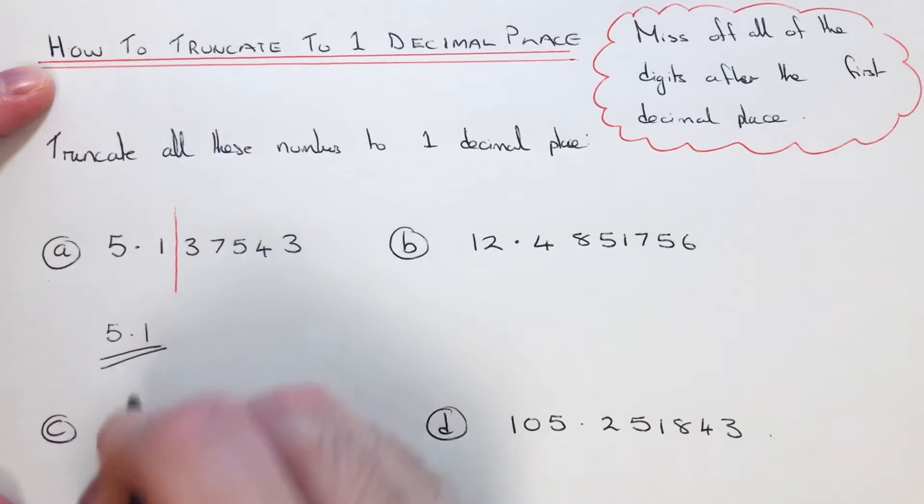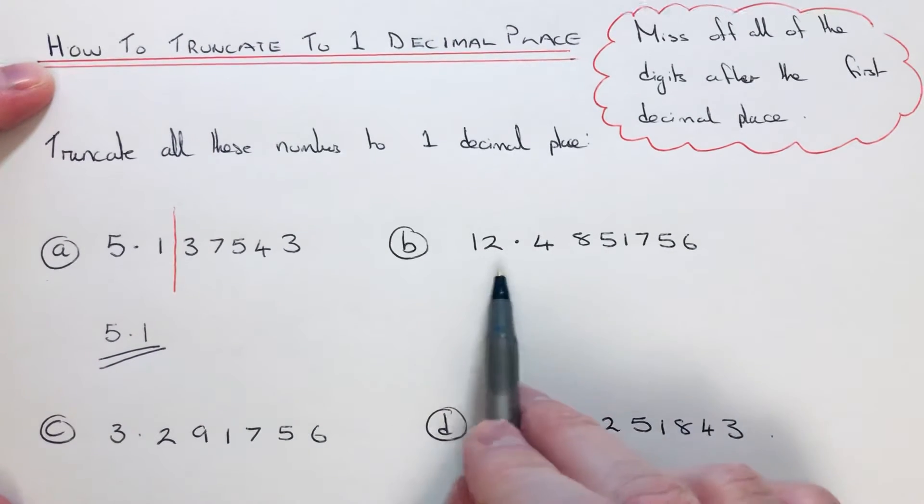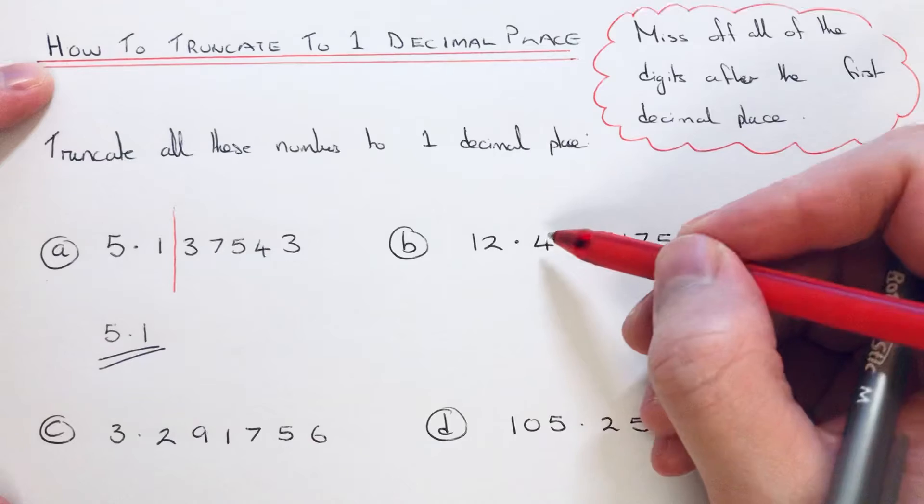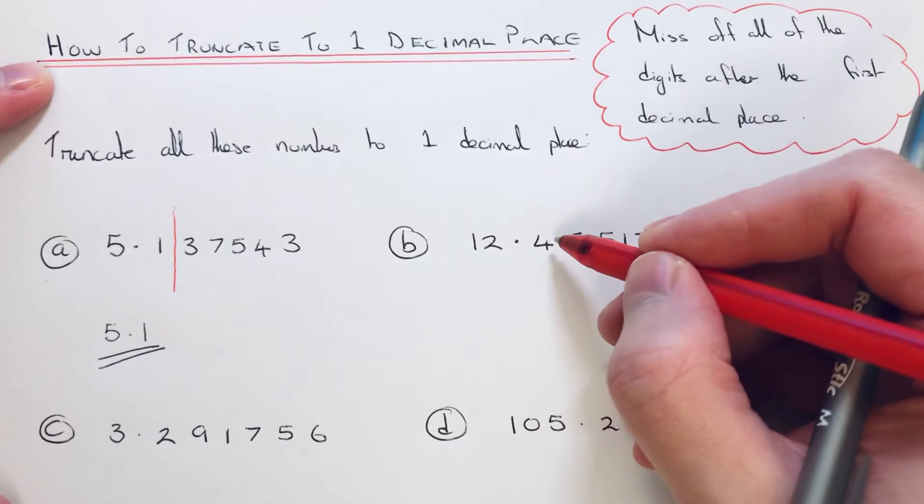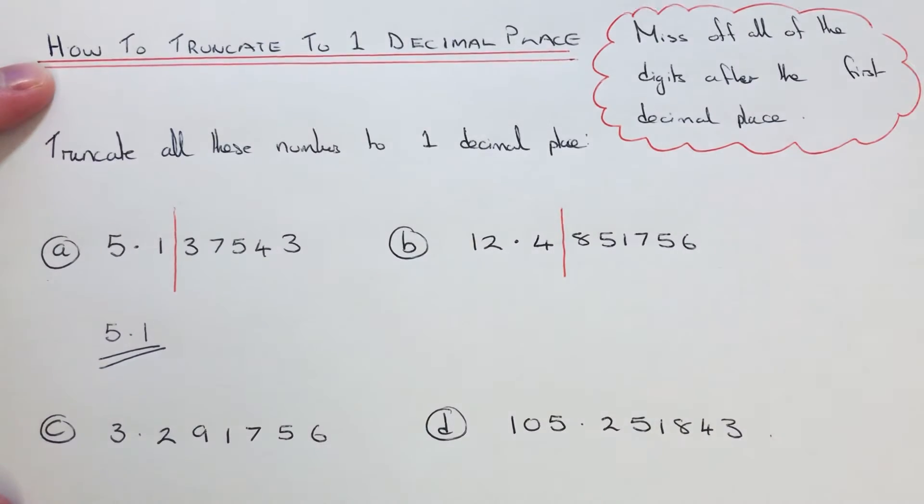The second example is 12.4851756. Again, put a line in after the first number after the decimal point, which is here, and we just need to copy all these digits before the line. So the answer is 12.4.